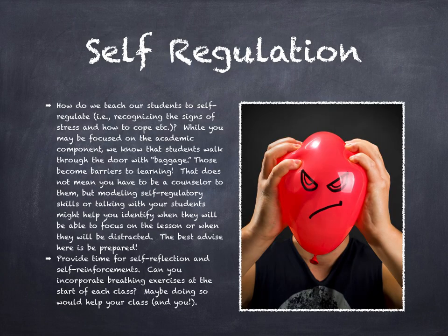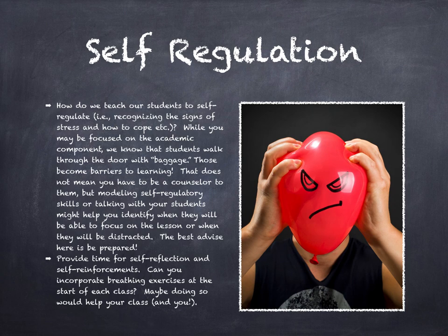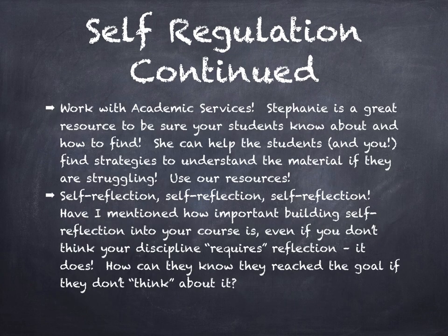The final tenet in the engagement section is self-regulation. The image here of a man squeezing a red balloon with an angry face on it demonstrates frustration and possibly stress. So how do we teach our students to recognize stress inside themselves? We all walk into the classroom with stress and baggage. Maybe free writing at the start of each class, or a one to two minute breathing or yoga exercise, might help students — and you too — focus on what you're about to do for that day. Remember that we have great resources here at Hiram to help our students, such as academic services. Guide them to these resources. And provide time for self-reflection — how will they know they've reached the goal if they don't think about whether they reached it or how they got there? Self-reflection is key.